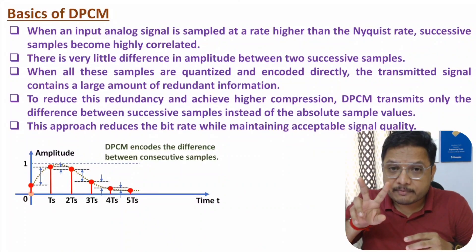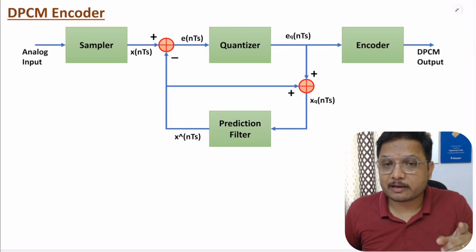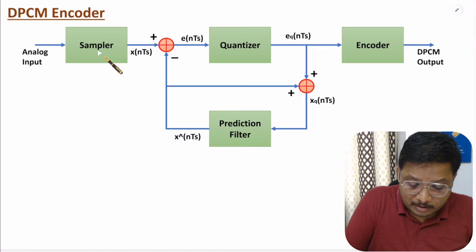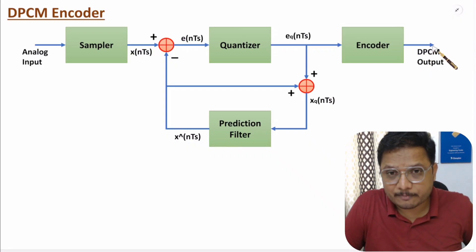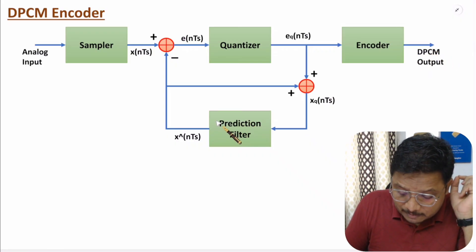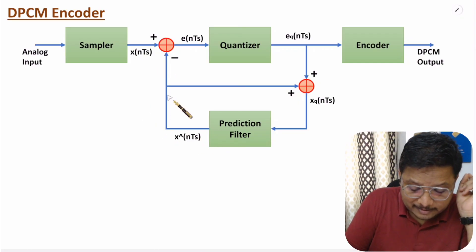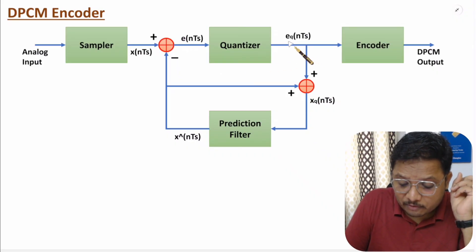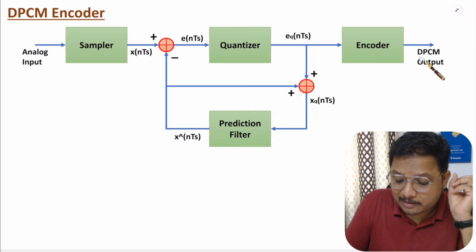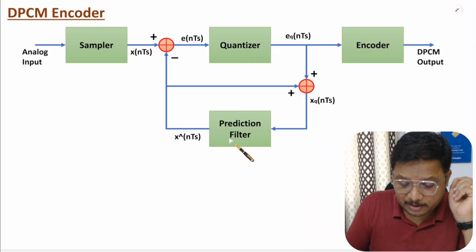Now I'll explain the DPCM encoder. There is only one difference between PCM encoder and DPCM encoder. In PCM encoder, we give analog input to the sampler, then the sampled signal goes to the quantizer, then to the encoder, and we get the PCM output. In the DPCM encoder, we have an additional block — the prediction filter. We predict the consecutive sample x̂(nTs), take the difference between the current sample and predicted sample to get the error signal, quantize it to get eq(nTs), encode it, and output the digital DPCM signal.